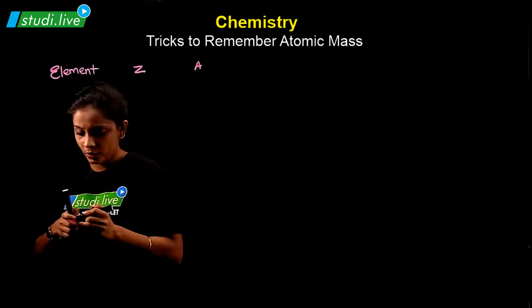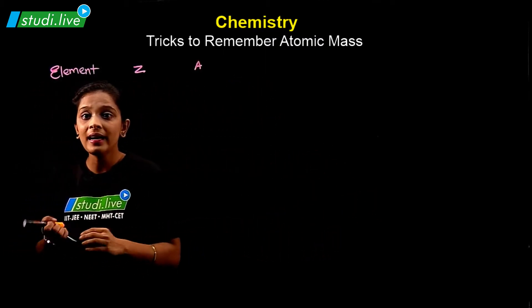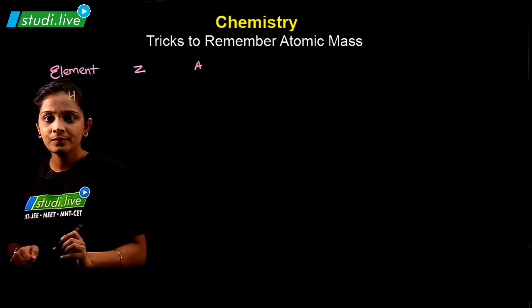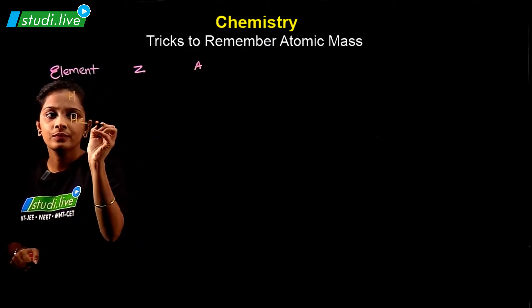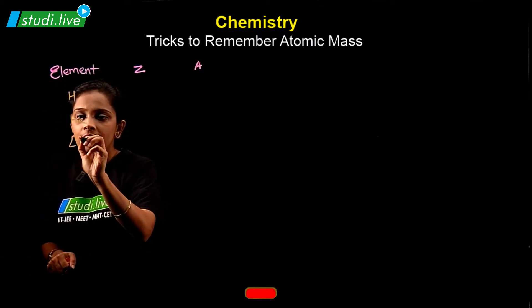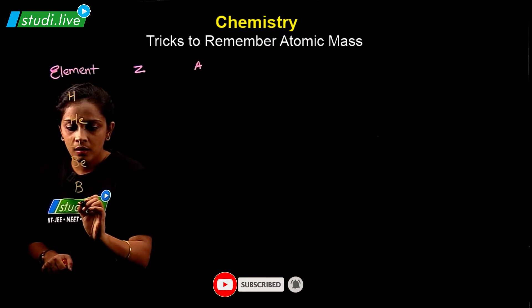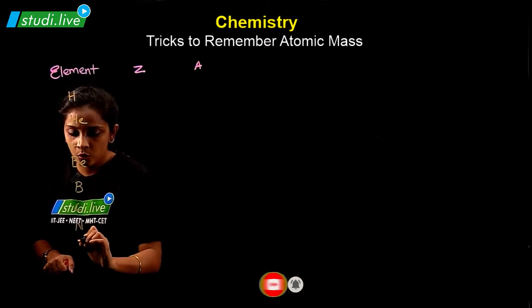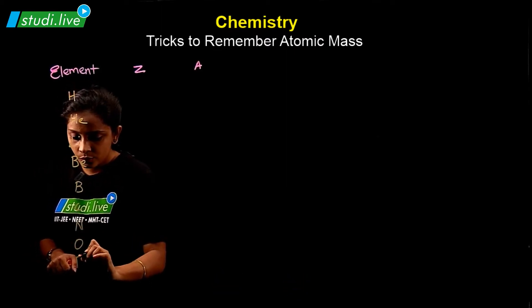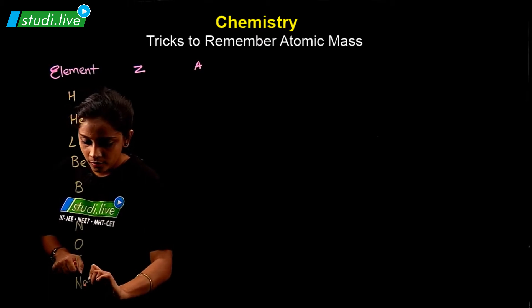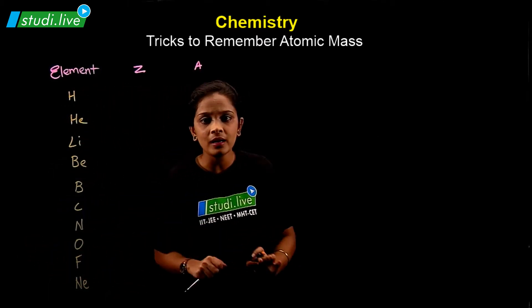So starting from hydrogen, we have hydrogen, helium, lithium, beryllium, boron, carbon, nitrogen, oxygen, fluorine, neon. This is the element we have written first.